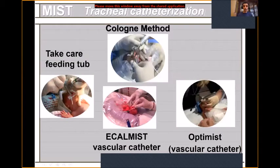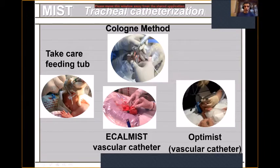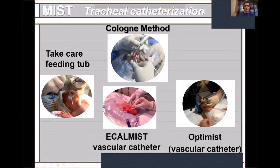The other way to give surfactant is minimal invasive surfactant therapy (MIST). There are two categories: tracheal catheterization (without intubation but placing a catheter in the trachea) — four types: the Cologne method from Germany, the TAKE-CARE method from Turkey, the OPTIMIST method from Australia, and our method called ECALMIST — early CPAP and large volume minimal invasive surfactant therapy.